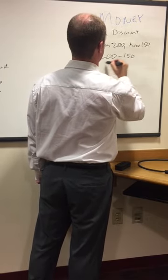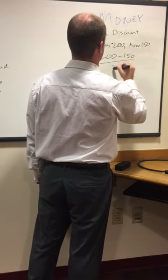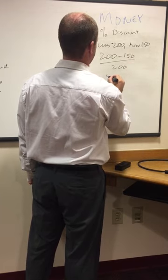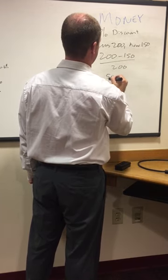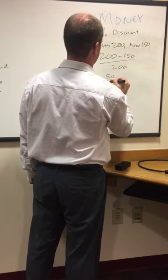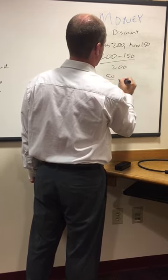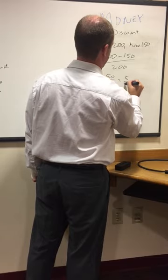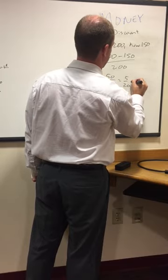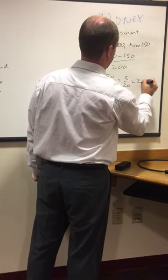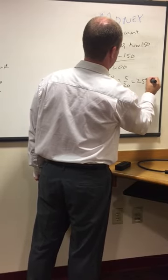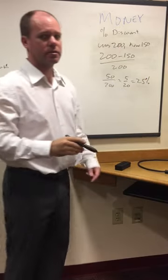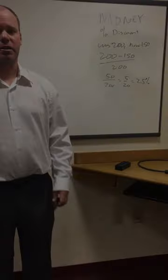200 minus 150, all over 200, equals 50 over 200. You can reduce that to 5 over 20, which equals exactly 25%.